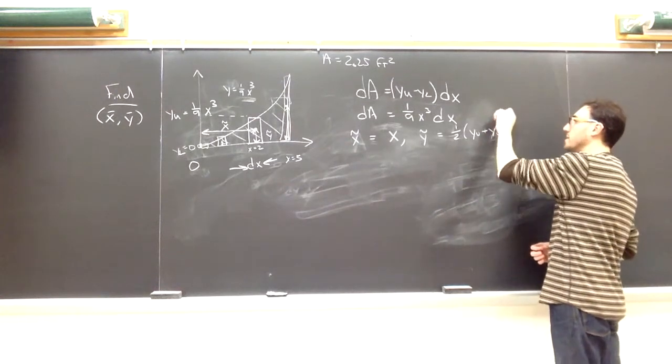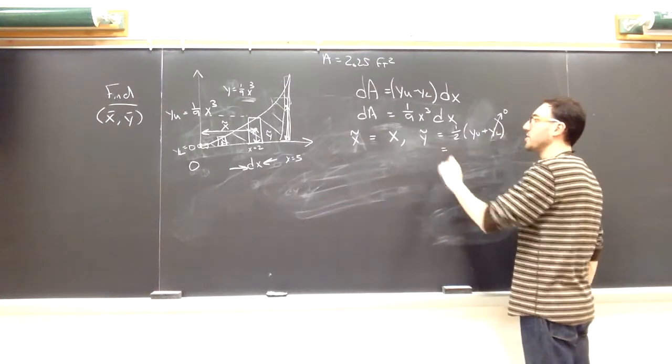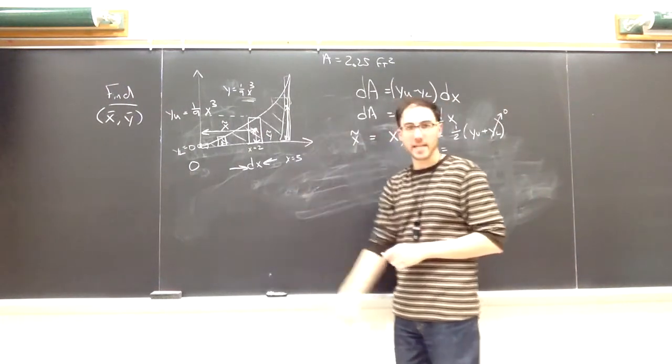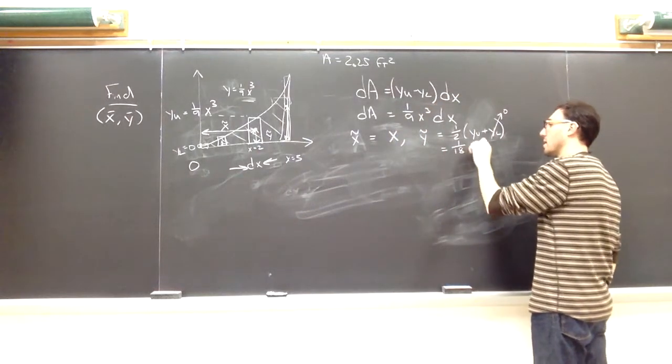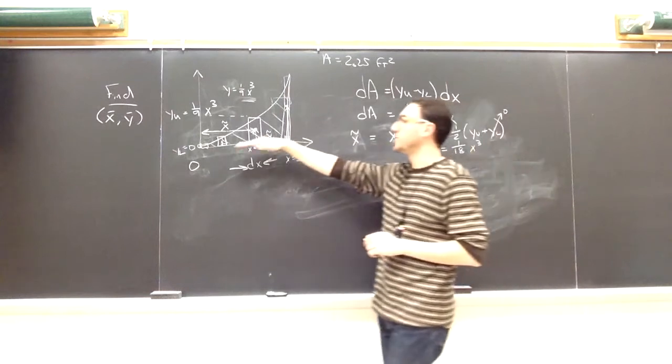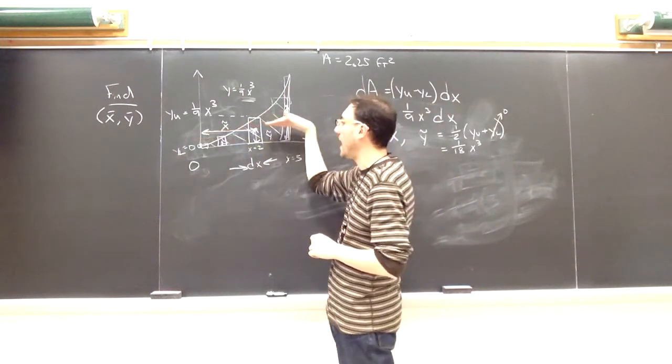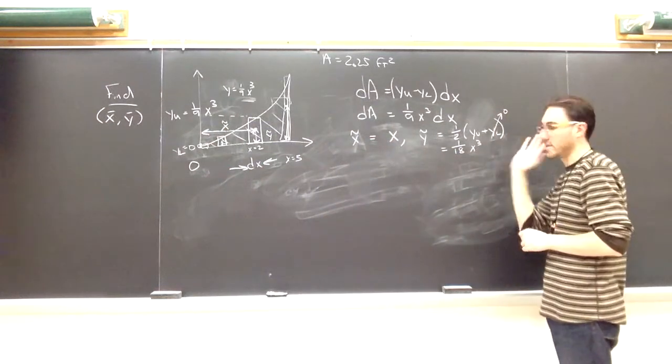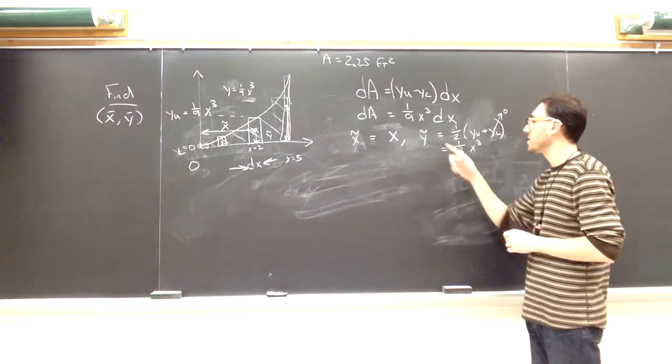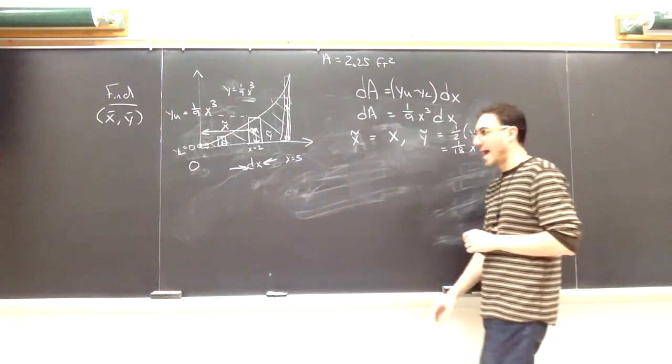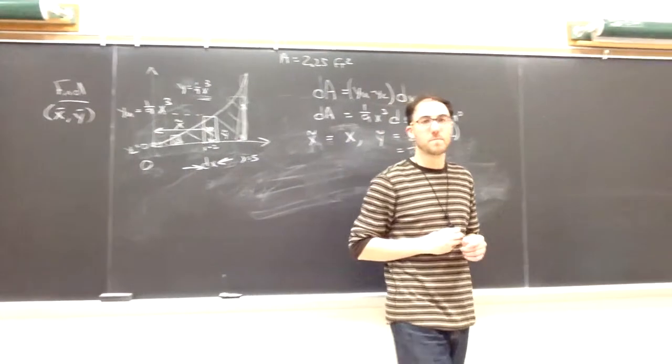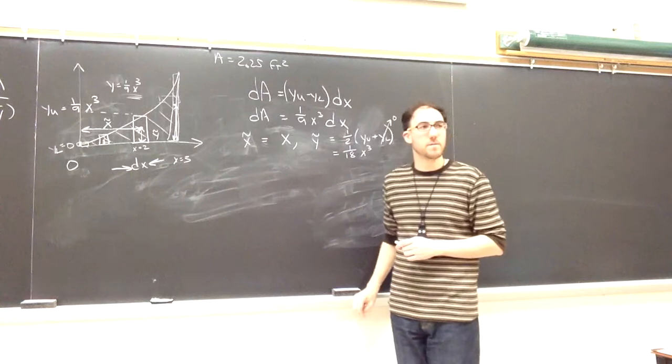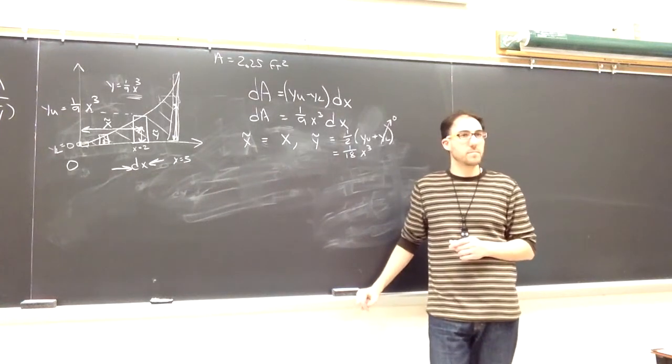In this case, because the lower is zero, it does turn out that that's just going to be one-half times the upper. So we do get the one-eighteenth x cubed. But in general, if the bottom is not just always at zero or always at a constant value, then it's just the average of those two values, which was also true here. So we have our x tilde defined, and we have our y tilde defined for any rectangle that we have. Questions on getting my x tilde, y tilde for this one?